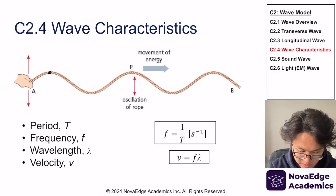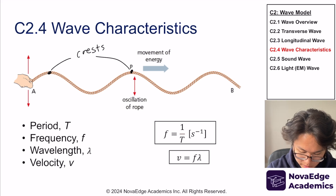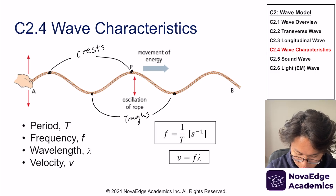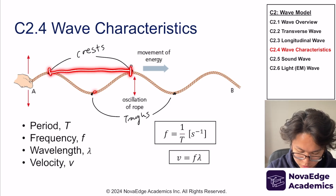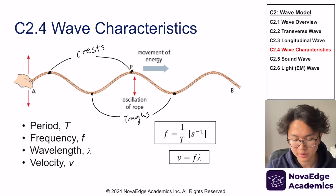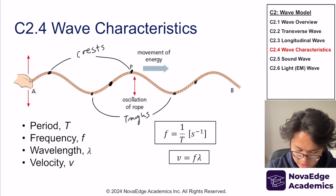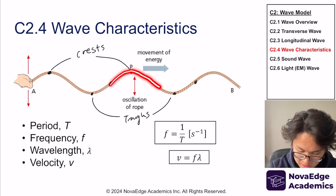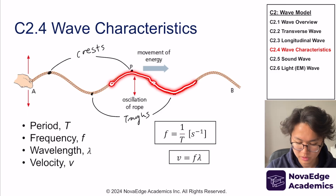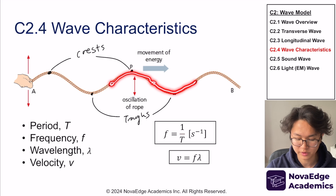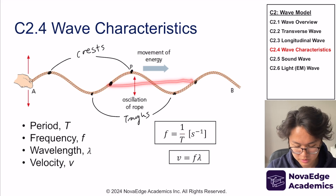Wavelength is the length between two crests. The bottom parts are called troughs. You can take the wavelength between two crests or two troughs — they're the same. One thing to be careful about: if you measure from the middle of the wave, you need to make sure it spans one complete cycle. Two consecutive midpoints is only half a cycle, so you need a full cycle to quantify it as a wavelength.